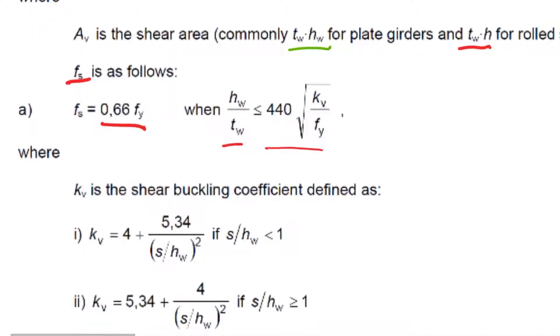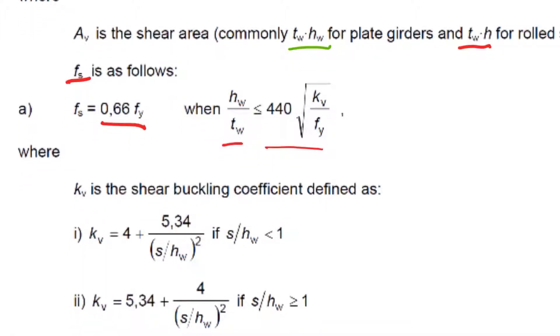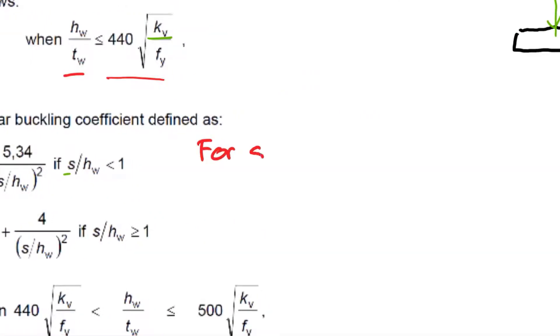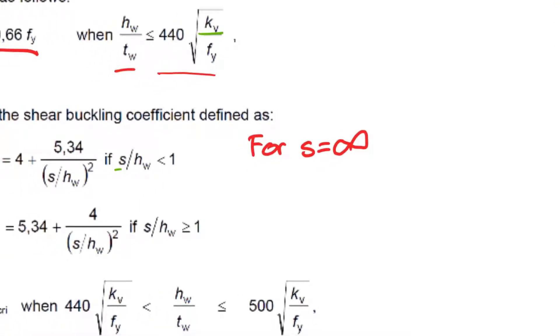Now what is this value kv? kv is the shear buckling coefficient defined as below. In our course we are not going to be dealing with design for shear when you have stiffeners, so we have no shear stiffeners. s is the spacing of stiffeners, so for s equals infinity, well tending to infinity, then you will find kv equals 5.34.